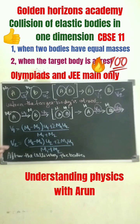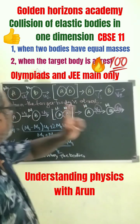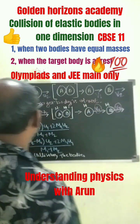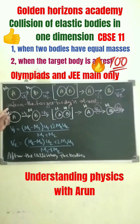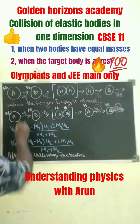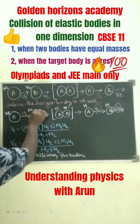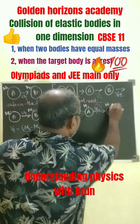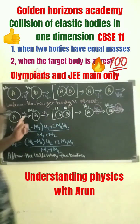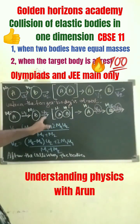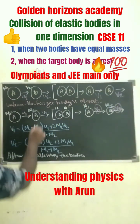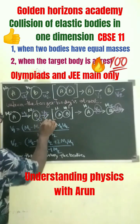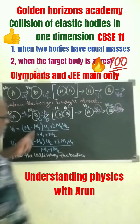Now let us go with Case 2: when the target body is at rest. Here the two bodies have different masses M1 and M2. The target body B is at rest, so U2 equals 0.